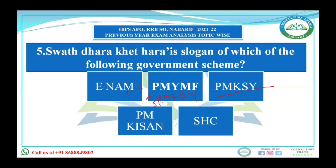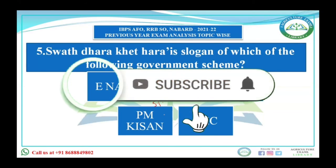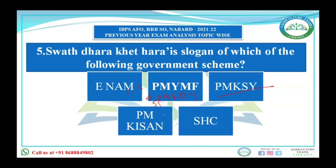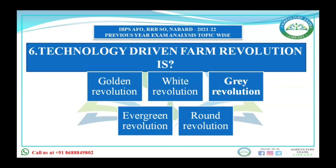The slogan 'Swastha Dharti, Khata Khet' — meaning healthy earth, green farm — is the slogan of the Soil Health Card scheme. It was launched on 19th February 2015 at Suratgarh, Rajasthan. The Soil Health Card contains information about the nutrient status of the soil with respect to 12 parameters: 3 macronutrients (NPK), one secondary nutrient (sulfur), micronutrients (zinc, iron, copper, manganese, boron), and physical parameters like pH, electrical conductivity, and organic content. Soil samples are taken twice a year when there is no standing crop, and farmers are provided a soil health card once every two years.